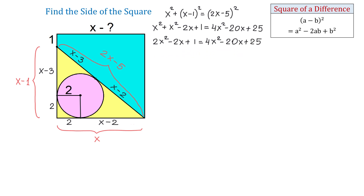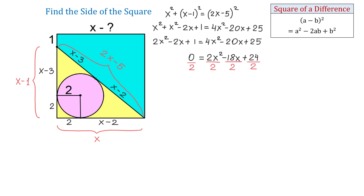This is a quadratic equation and to solve it, we need to move all the terms to one side. If we subtract 2x squared from both sides, then on the right side we will have 2x squared. If we add 2x to both sides, then on the right side we will have minus 18x. And if we subtract 1 from both sides, then on the right side we will have plus 24. The left side is 0. To simplify further, we divide both sides by 2, giving us x squared minus 9x plus 12 equals 0.